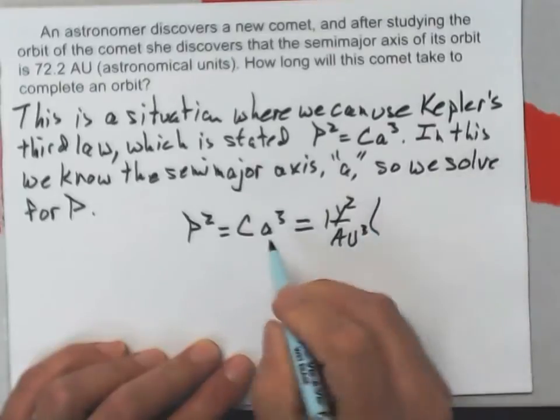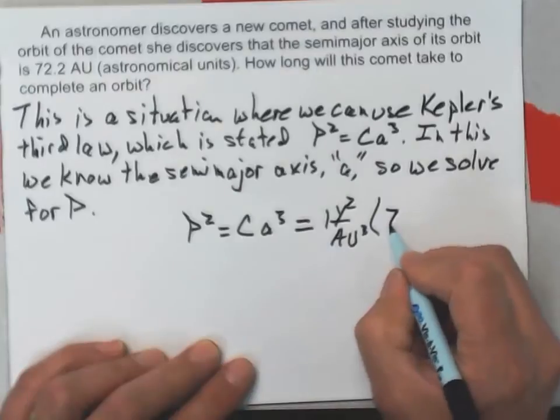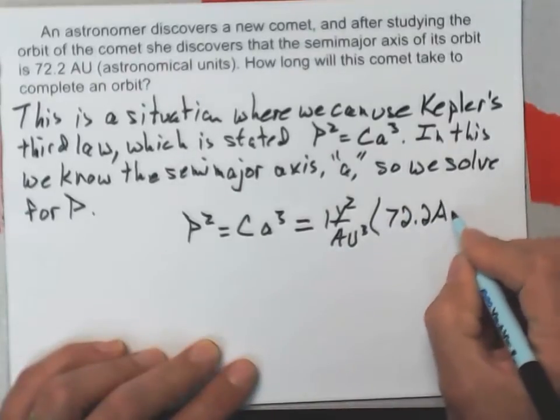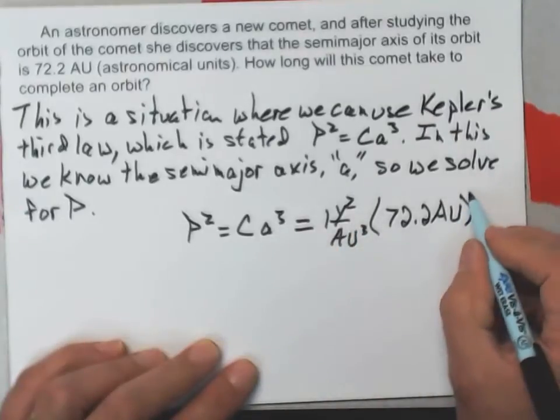And the value of A that I'm given here is 72.2 astronomical units, and that's the A that gets cubed here.